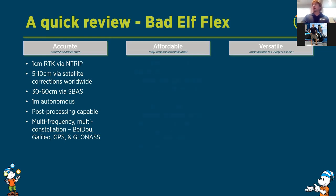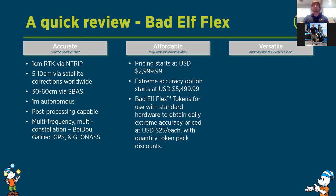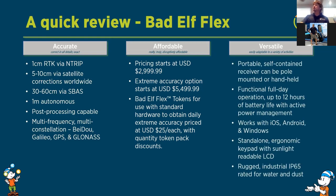On affordability: the standard off-the-shelf Flex is under $3,000 for 30–60 centimeter accuracy. To unlock the Flex as a fully survey-capable rover forever, you're looking at $5,499 — a fully survey-grade rover. Tokens are $25 a day, giving you a 24-hour countdown that unlocks the Extreme version. This is a great option if you only need high accuracy a few times a year and want to job-cost it to a specific project.